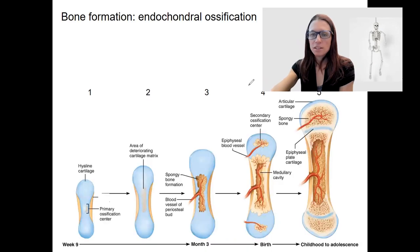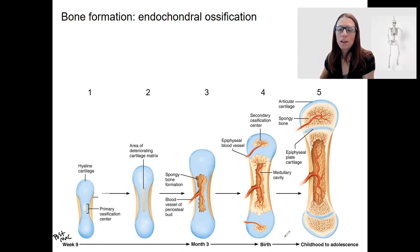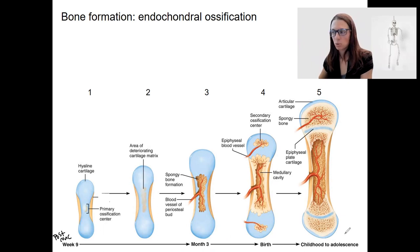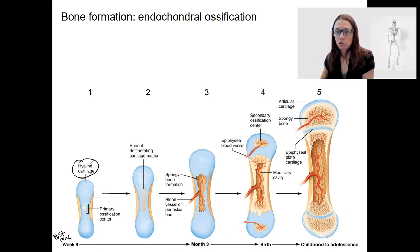Here is an overview of endochondral ossification. We're starting post-conception at nine weeks and going through month three, birth, and then childhood to adolescence where growth is going to continue to occur. Early in development, there is no bone — it's all hyaline cartilage. So it's a hyaline cartilage model; that's where the name endochondral ossification comes from.